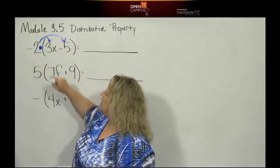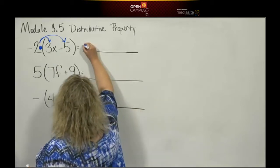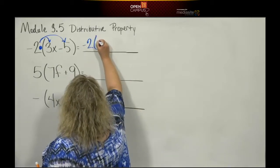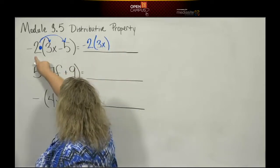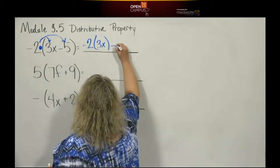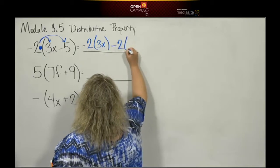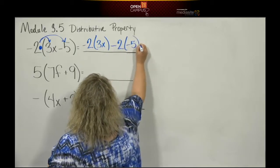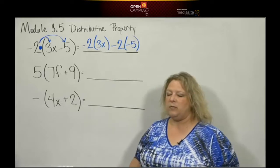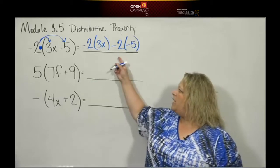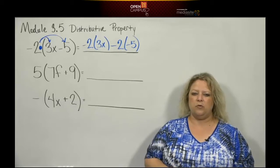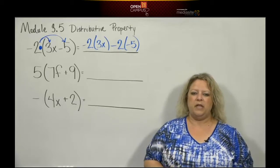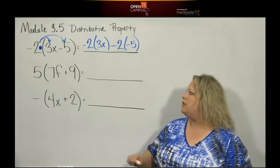So I have negative 2 times 3x, and I'm going to go ahead and write it like this first, and then I have negative 2 times negative 5. If you don't want to do this step, you don't have to. You can do the multiplication in your head, but I'm just writing this out to the side so you can get a visual of what it should be if you did multiply this in your head.